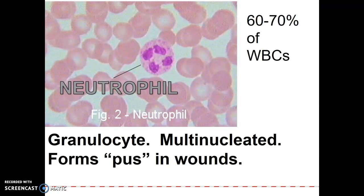Neutrophils are the most abundant leukocyte — 60 to 70 percent of all white blood cells. You can see three of them easily in the slide with their three to four nuclear lobes. They're called granulocytes because you can see little grains on the edge of the cell when it stains. They're multinucleate and form pus in wounds. Neutrophils attack bacteria and viruses by engulfing them — their lysosomes digest them — and they give off a greenish color. So if you've got green snot, thank your neutrophils.